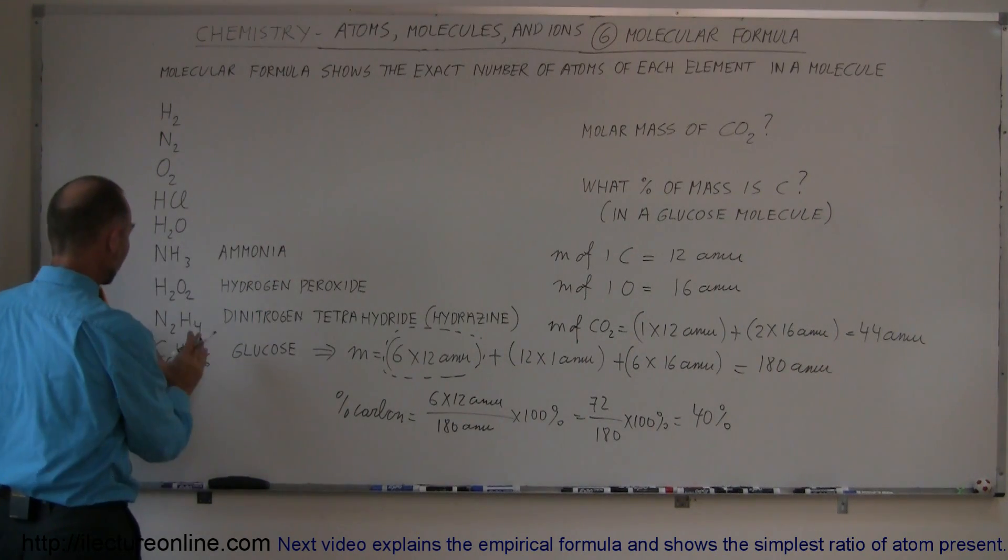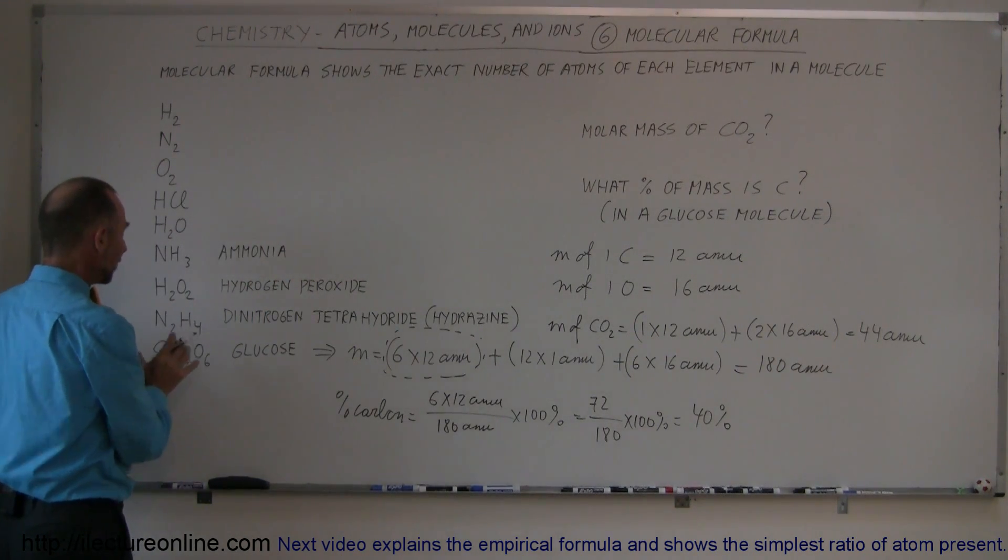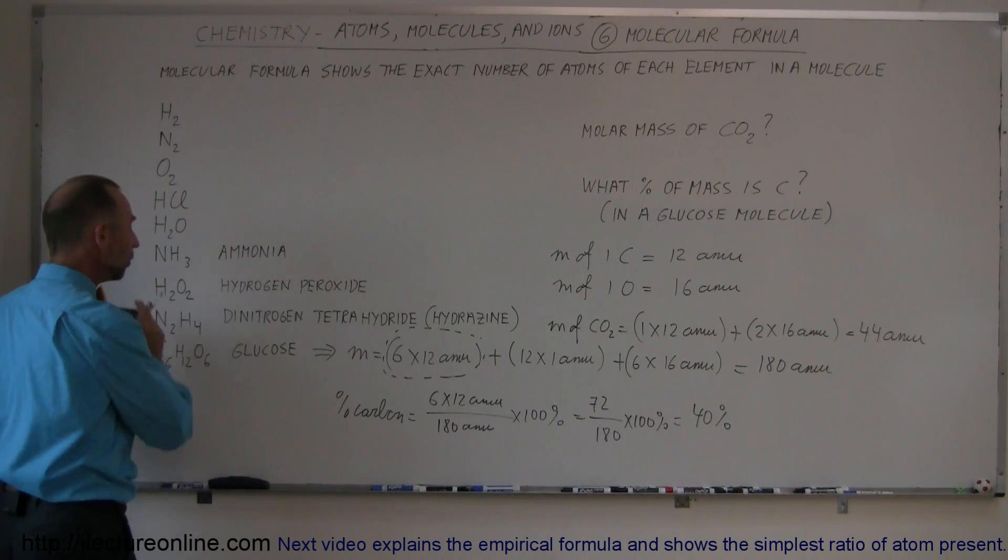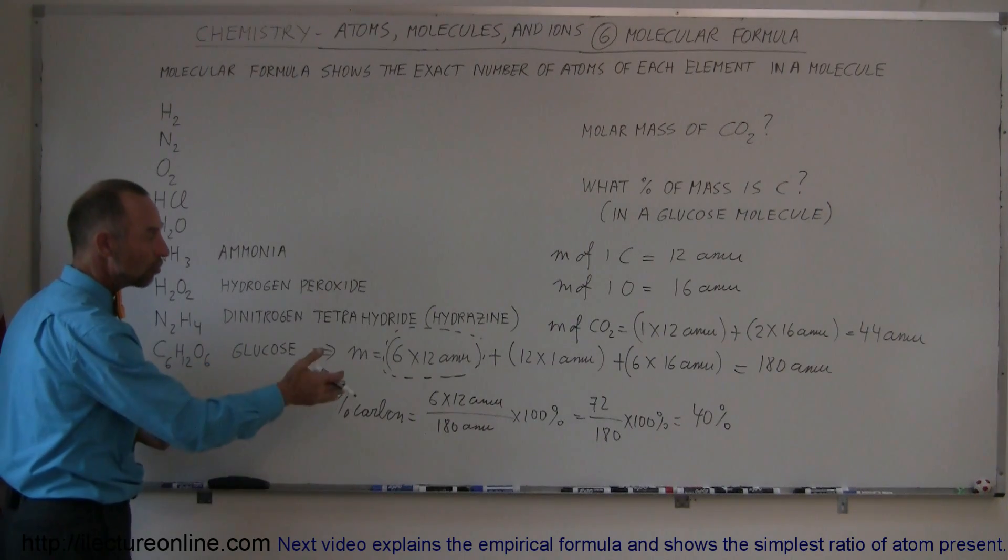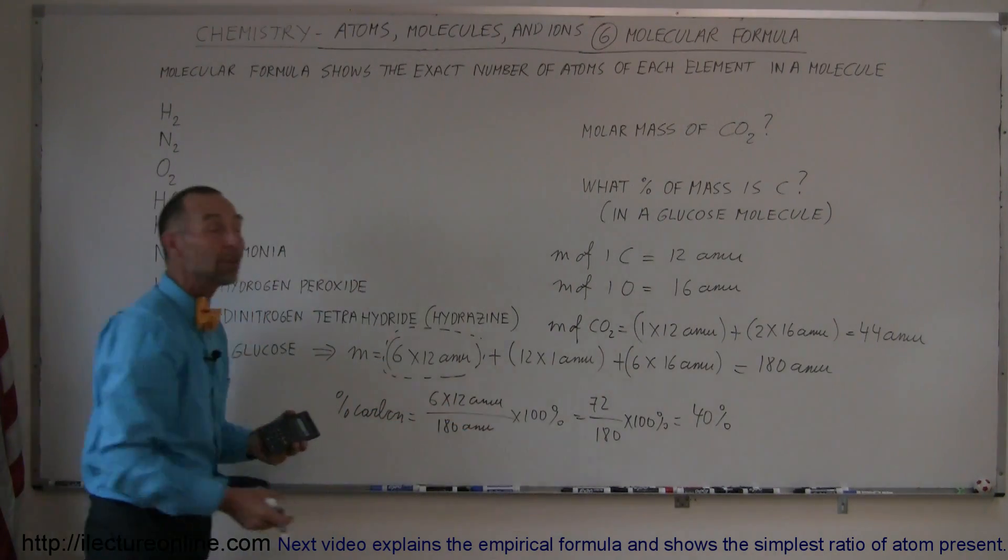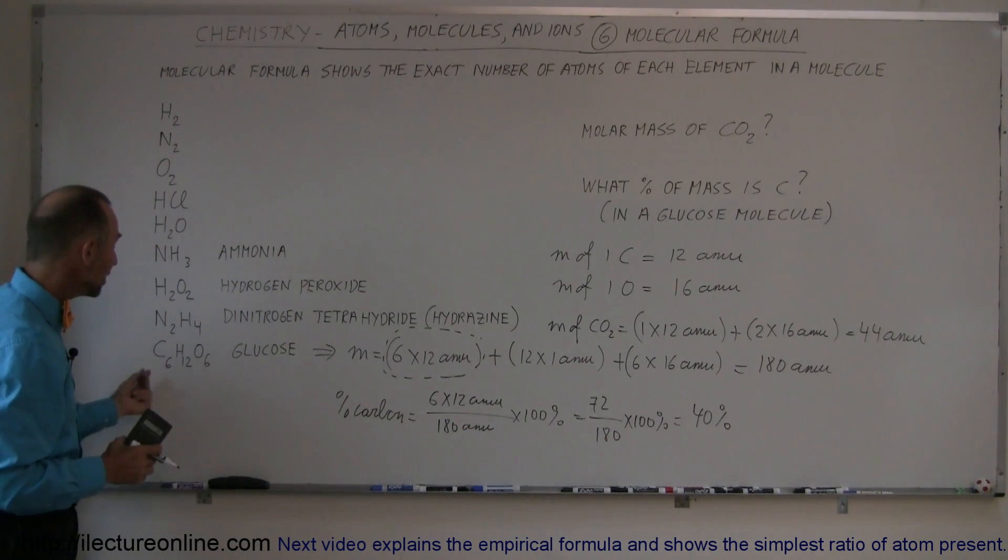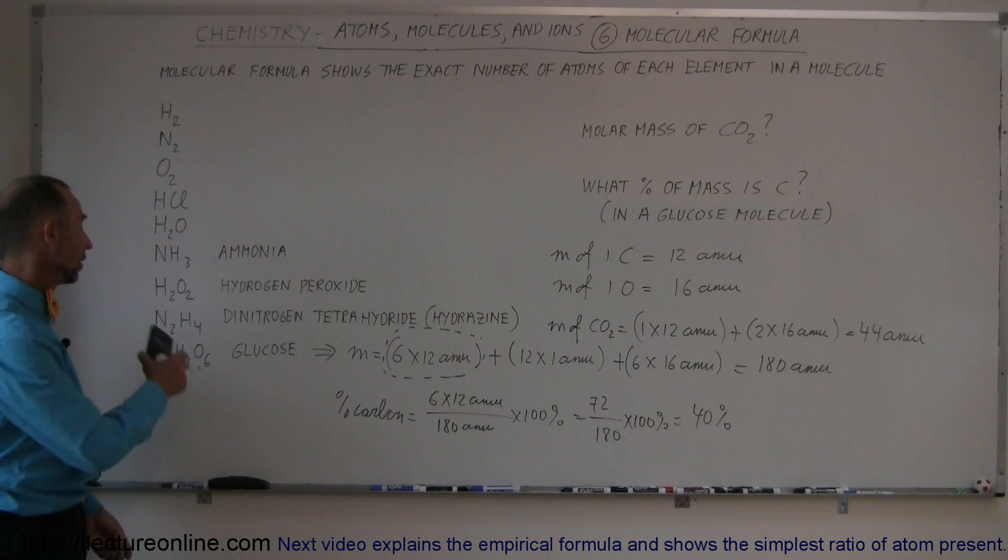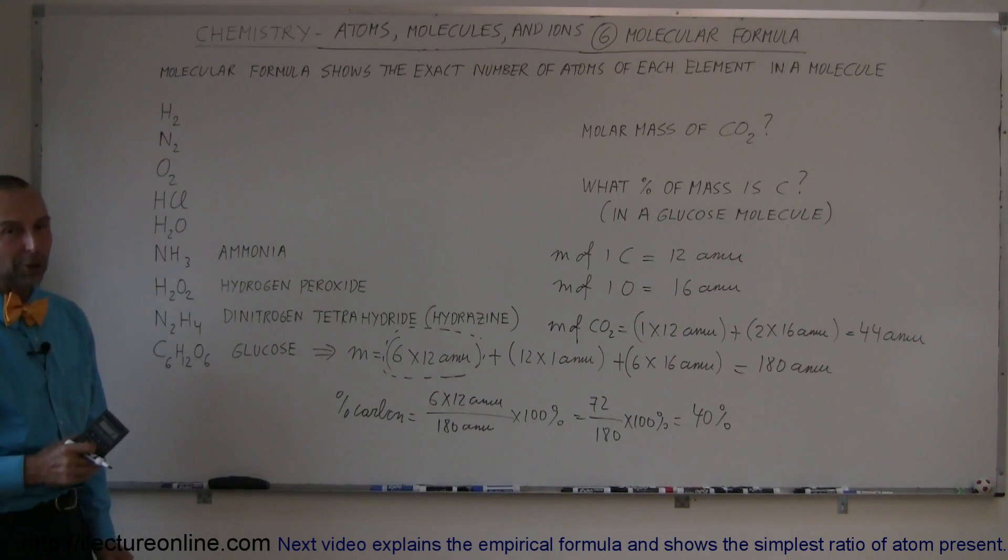So that means that once we know how to look at the molecular form of a molecule, we can then figure out what the mass of each constituent is, we can figure out the mass of the whole molecule, and then we can take the ratio, multiply by 100%, and then we can figure out the percentage of each constituent in the molecule as a percentage of the whole molecule. In this case, carbon is 40% in mass of the glucose molecule, and that's how we work with the molecular formula.